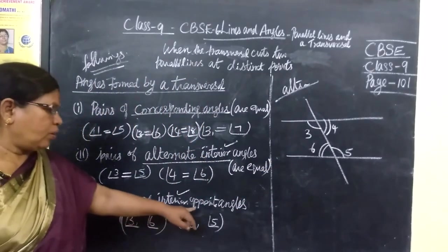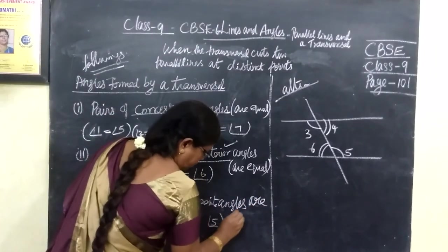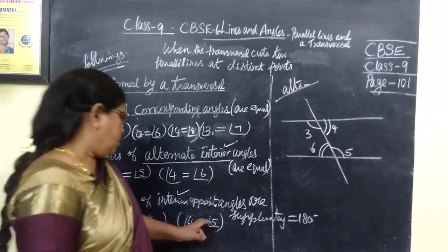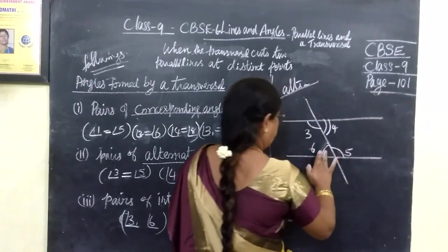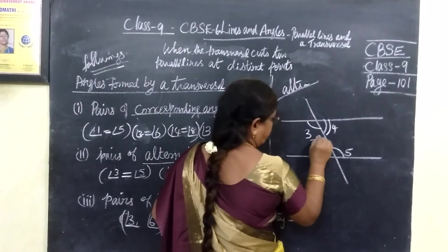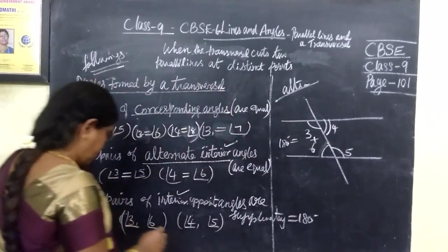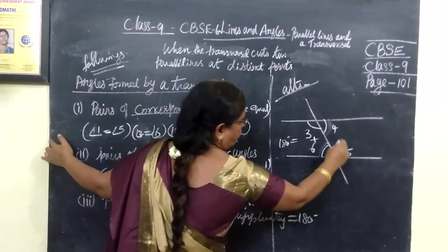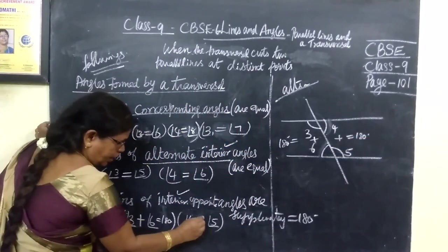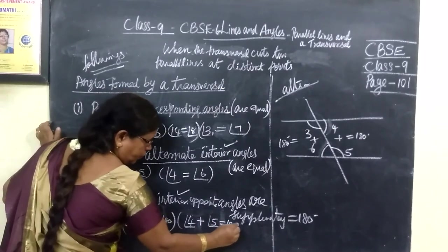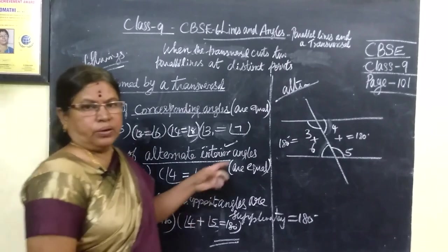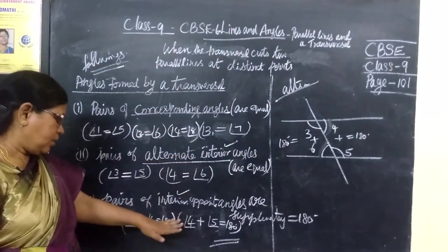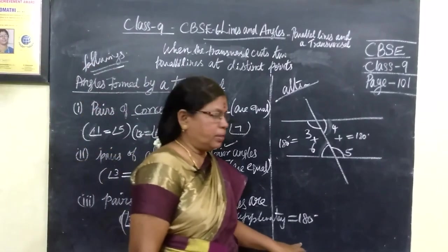Pairs of interior opposite angles are supplementary, meaning their sum equals 180 degrees. So angle 3 plus angle 6 equals 180 degrees, and angle 4 plus angle 5 equals 180 degrees. When these properties are extended to a pair of parallel lines, corresponding angles are equal, alternate interior angles are equal, and interior opposite angles are supplementary. In the next class we will see the exercise.